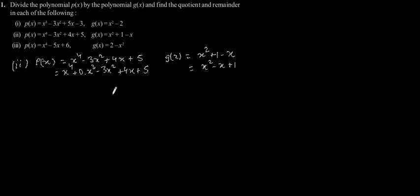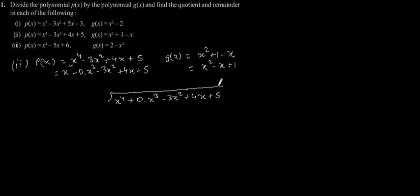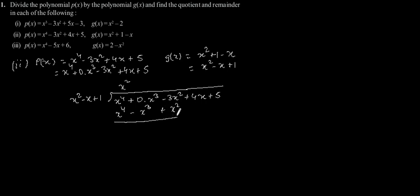Now let's divide. The dividend is x to the power 4 plus 0 times x to the power 3 minus 3x squared plus 4x plus 5, and the divisor is x squared minus x plus 1. Multiplying x squared with the divisor, we will get x to the power 4 minus x to the power 3 plus x squared. Now subtracting this, we will get the next term.